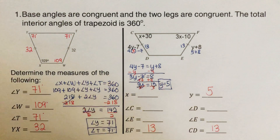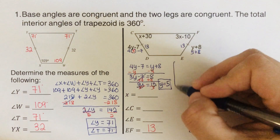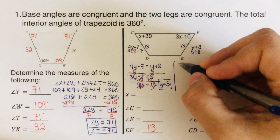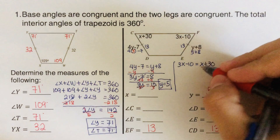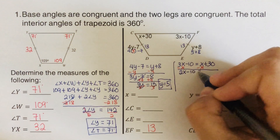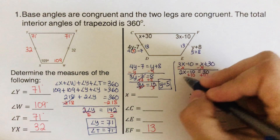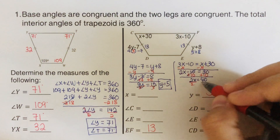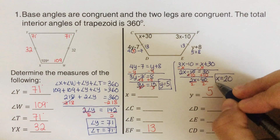Now we solve for x. Since angle D and angle C are base angles of the trapezoid, they are congruent, so we set them equal: 3x minus 10 equals x plus 30. Subtracting x from both sides gives 2x minus 10 equals 30. Adding 10 to both sides gives 2x equals 40, so x equals 20.